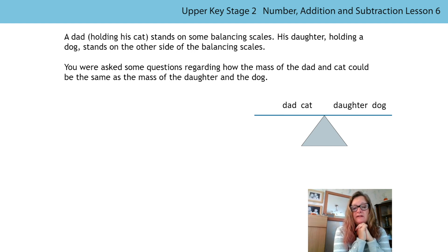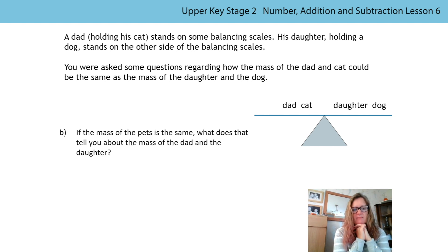One option, they could all weigh the same mass. Then you were asked if the mass of the pets is the same. So if you've got a large cat and a small dog, the mass might be the same. I set you a little bit of extra homework to try and find out the approximate mass of the dog and the cat and the dad. Did you find out? Fantastic.